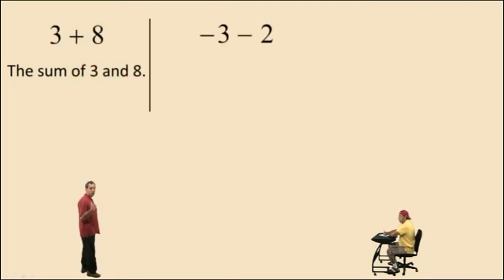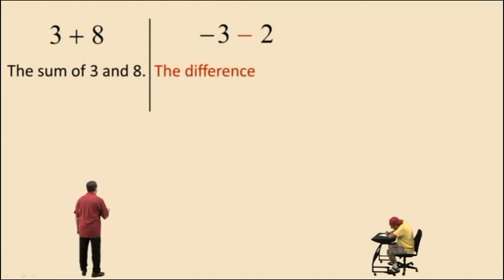Now, in this expression, negative 3 subtract 2, the operation is subtraction. The word for subtraction is difference. So we have the difference of what two things? Of negative 3 and a positive 2. So this expression translates into the word statement, the difference of negative 3 and 2.